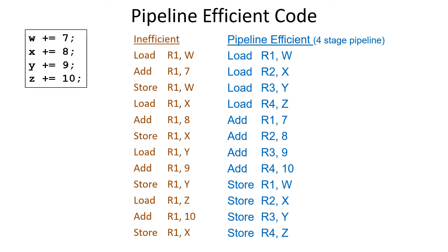Here's an example of four Java or C++ instructions where we're just adding some numbers to values. The simple assembler version is shown on the left, where everything is picked up one instruction at a time and always uses the same register. On the right, it's much more efficient. Assuming a four-stage pipeline, we use four different registers. By the time we use register one again, it's been four instructions later, so the four-stage pipeline is no longer concerned about the value in R1. And when we store the value in R1, it's four instructions after adding it, so the write-back is already completed.